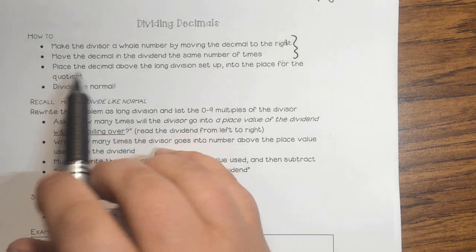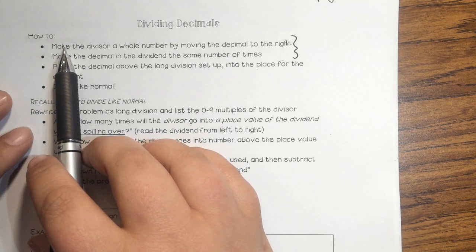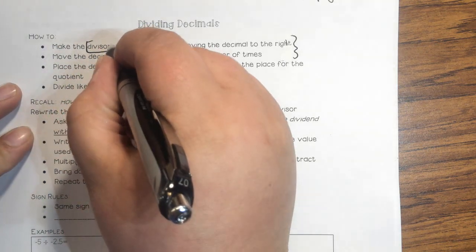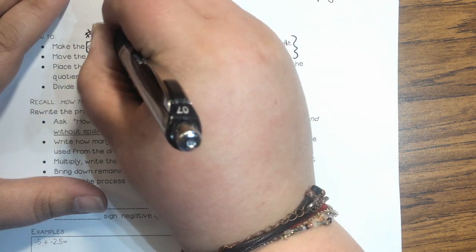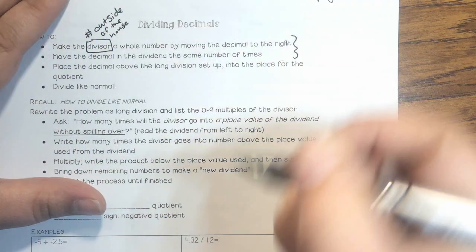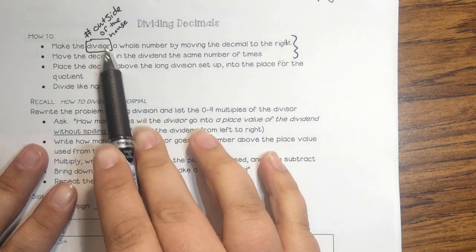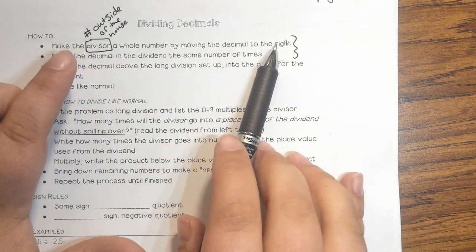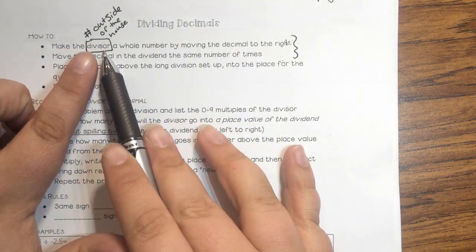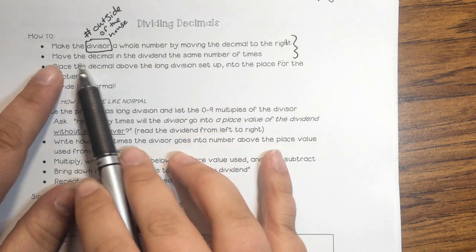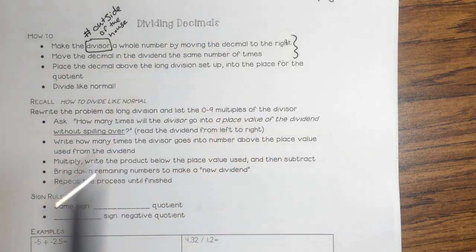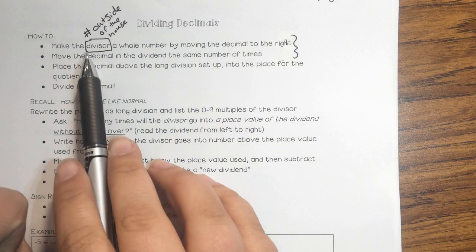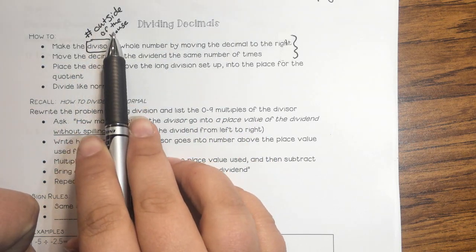So how to: the very first thing is we're going to actually make the divisor a whole number by moving the decimal. The divisor, by the way, remember, is the number on the outside of the house — the number outside of the house. So we're moving the decimal to the right in order to make the divisor a whole number. After we're done with that, we're going to move the decimal in the dividend the same number of times. It might not necessarily make both of them a whole number — the one that has to be a whole number is the number on the outside of the house, the divisor.